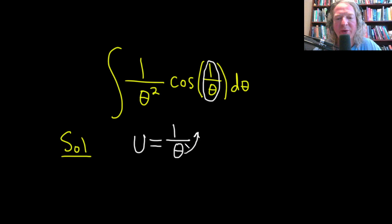This is really 1 over theta to the first power. So when you bring it upstairs, it'll be u equals theta to the negative 1. The exponent becomes negative when you bring it up.